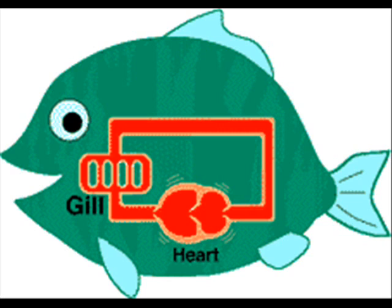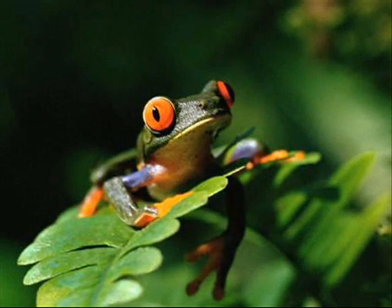The next step up the vertebrate ladder is the vertebrate with a three-chambered heart. The frog is a good example of this level. These vertebrates have a heart with two atria and one ventricle. Blood leaves the ventricle and travels to the aorta; because the aorta is divided or forked, the blood can travel either to the lungs or to other organs. Which atrium the blood passes through depends on whether the blood is being routed to the lungs or the other organs. But in either event, all the blood passes through the ventricle.